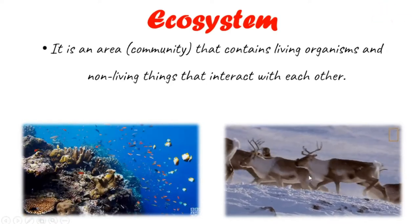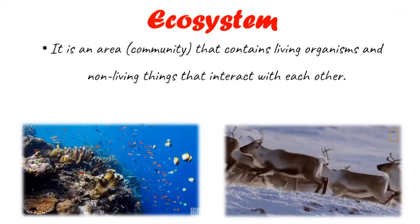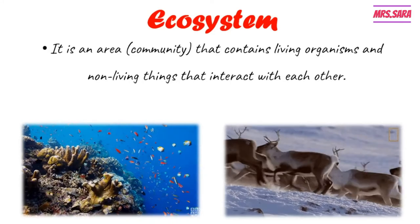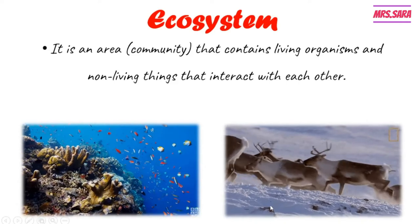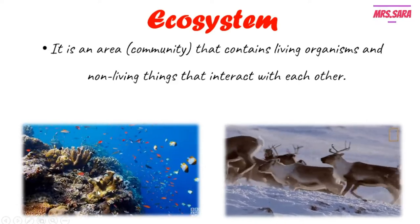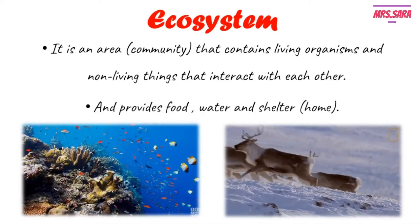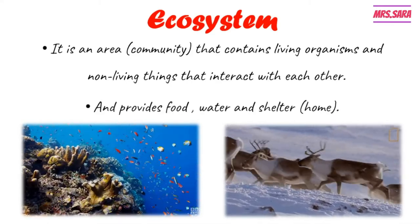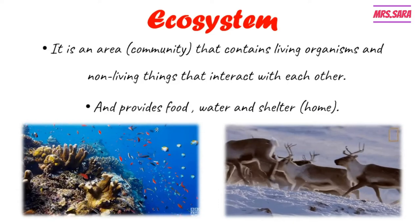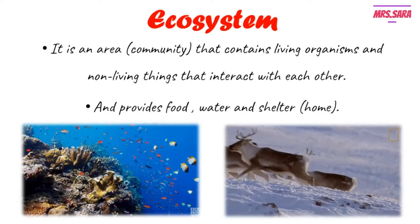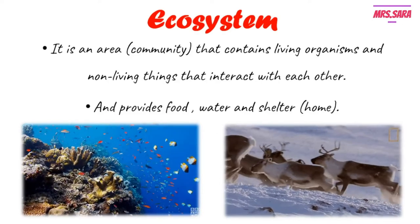The ecosystem is an area like the ocean, the tundra, or a community. It is an area or community that contains living organisms like fish and deer, and non-living things like ice, rocks, and coral reef, that interact with each other. The ecosystem provides food, water, and shelter — shelter meaning home — for animals, plants, or even humans.